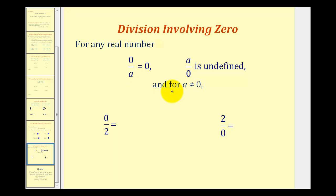So let's take a look at two examples. Here we have zero divided by two, which is equal to zero. Here we have zero, but two divided by zero is undefined.